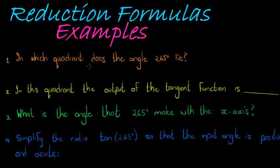Now in this example, we have questions that lead us to find the answer that we eventually want in order to write this trigonometric ratio with the interior angle, or input angle, to be positive and acute. So this is what we start with. First we ask ourselves: in which quadrant does this angle lie?